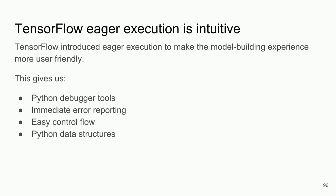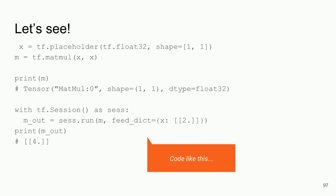Here's our boilerplate code. In graph land, we create our data types and nodes — variables, constants, placeholders. In this case we do matmul, matrix multiplication, and print the result. Remember: describe the graph, then run the graph. The top half describes the graph; the bottom half with tf.Session runs it — we get a matrix multiplication result of four. In eager execution land, it just runs when you call for an operation, and it looks much simpler — this becomes this.